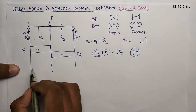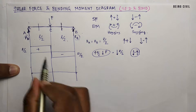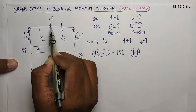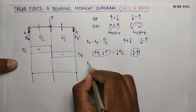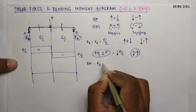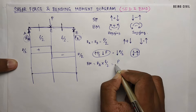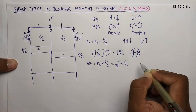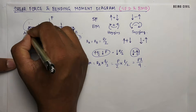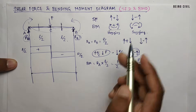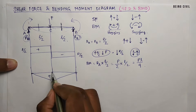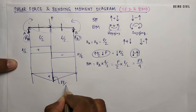Now for the bending moment. The bending moment is force into distance. At the supports, which are pin supports, the bending moment is zero. At position C the bending moment is RA into this distance, which is L by 2. So RA is P by 2, multiplied by L by 2, giving PL by 4. You can see the beam bends like this, so the bending moment is hogging and therefore positive. This ordinate is PL by 4.